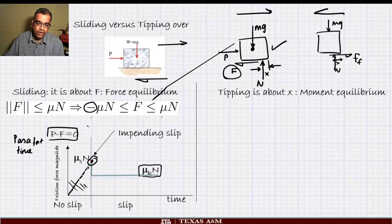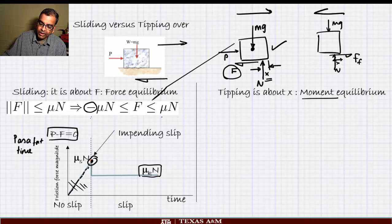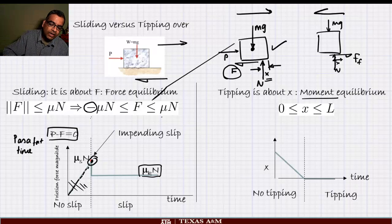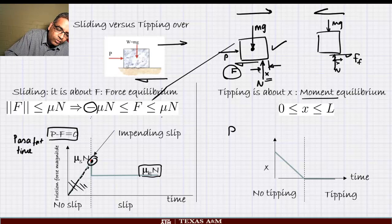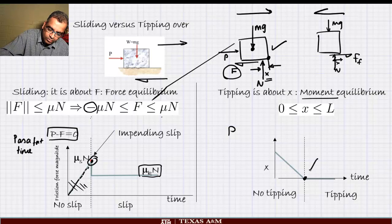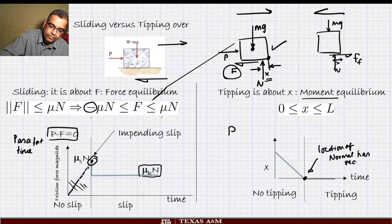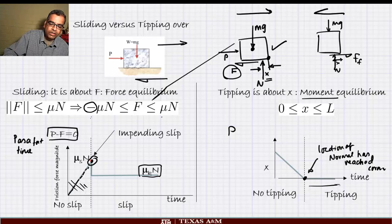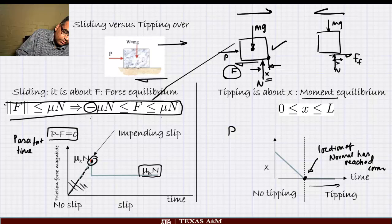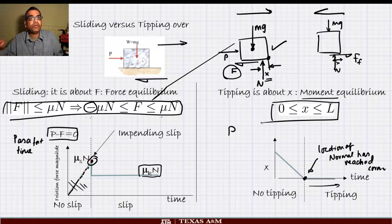Tipping is an entirely different situation — it is about the value of x and moment equilibrium, not force equilibrium. The constraint is 0 ≤ x ≤ L. As P increases, the location at which the normal force acts shifts toward the corner. When x reaches zero — meaning the normal force has reached the corner — the body will tip. Before that point it will not tip; beyond it, it will. So for sliding the condition involves F, and for tipping the condition involves x.